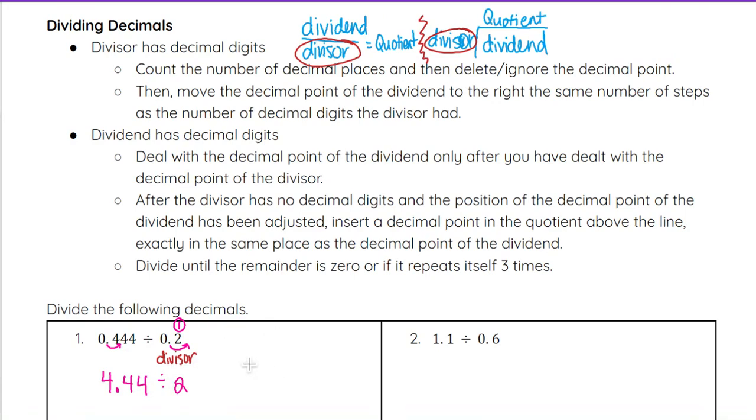And when we set up our long division with 4.44 underneath and 2 out here, if you choose to go this route, as opposed to doing it in your head, then we will just leave the decimal point in the exact same location as where it was in the dividend in our quotient.